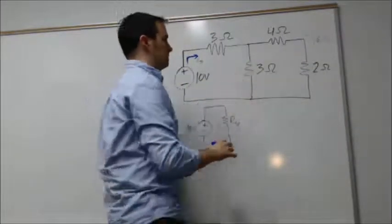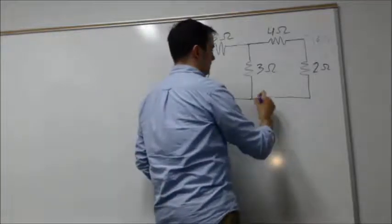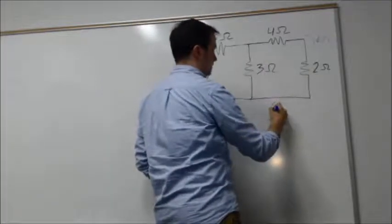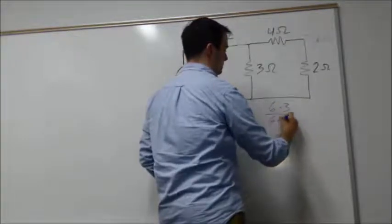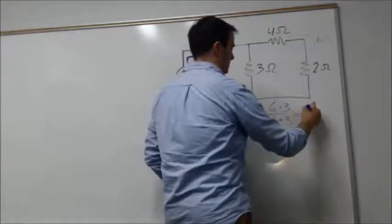The equivalent for just these two branches together is 6 times 3 over 6 plus 3, which gives us 18 over 9, so 2 ohms just for this branch.